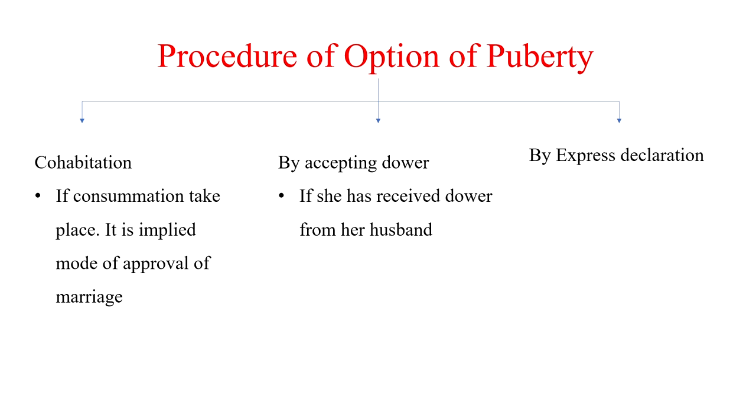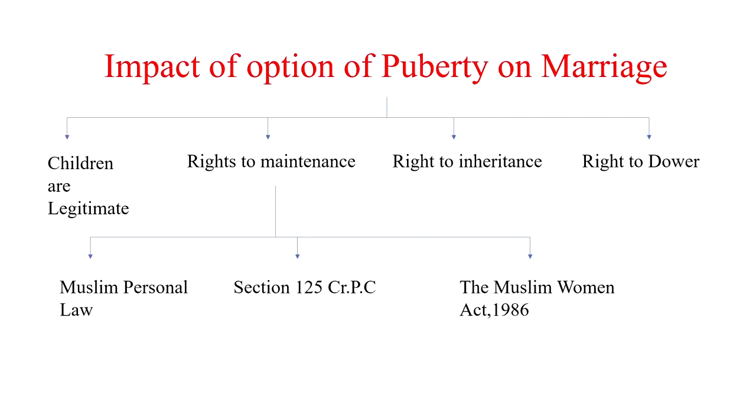Age of puberty is a bona fide ground mentioned in the Dissolution of Muslim Marriage Act 1939. Section 2, subsection 7 talks about age of puberty. On that basis, a Muslim female can get divorce against her husband if she is not willing to live with him. Considering the plight of Indian Muslim females, the Act was enacted in 1939 and Muslim females have been given more liberty to break their matrimonial tie if they are not satisfied with their husband.